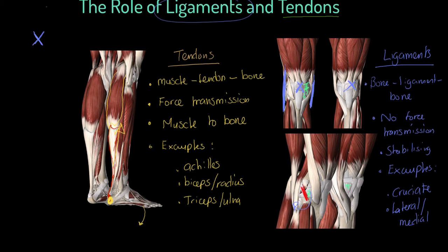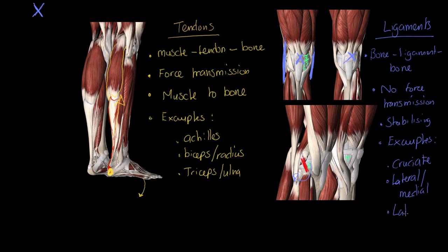I want to mention one other, quite interesting example — it's called the labrum. If we think about the very top of the femur, the femur juts off and makes its ball to go into the hip. The labrum actually connects here — inside the hip cavity — connecting the femur to the pelvis itself. It's an interesting example to be able to give, because it's quite unique.